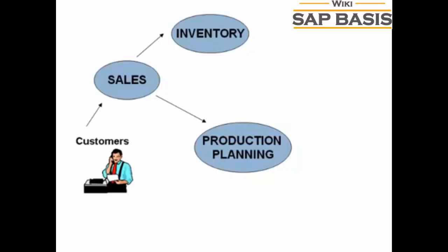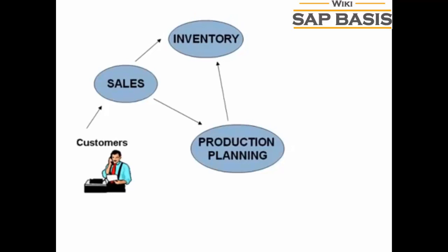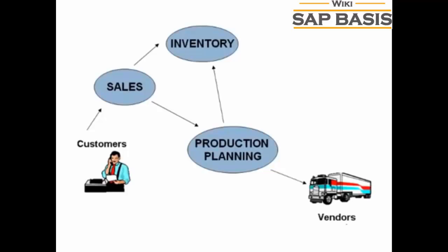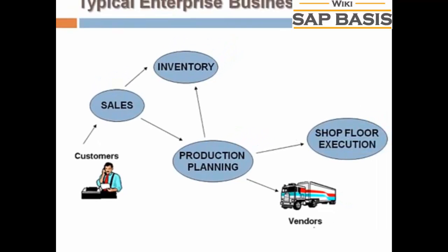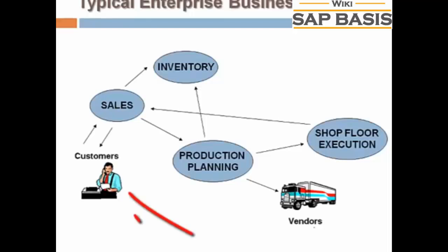The production planning team checks with the inventory department for availability of raw material. If raw material is not available within the inventory, the production planning team buys the raw material from the vendors. Then production planning forwards the raw materials to the shop floor execution for actual production. Once ready, the shop floor team forwards the goods to the sales team, who in turn deliver it to the client.